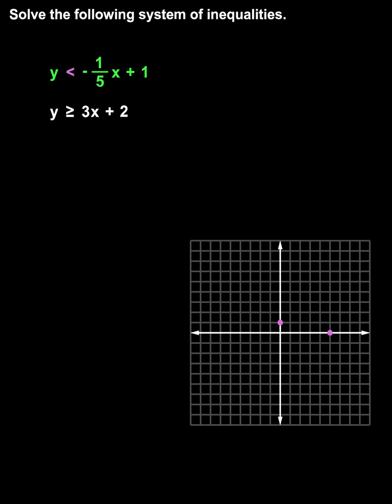Now, notice that our inequality uses a less-than sign. This means that we draw a dotted line connecting the points, rather than a solid line.